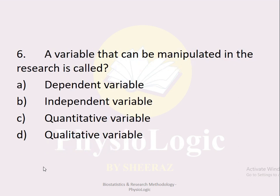MCQ number six: A variable that can be manipulated in the research is called: dependent variable, independent variable, quantitative variable, or qualitative variable. The correct option is option b, independent variable — this is the variable we just discussed in the previous scenario.